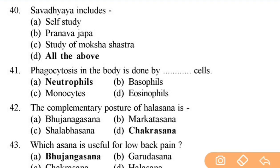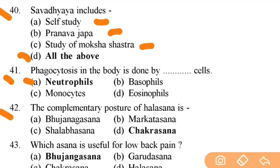Svadhyaya includes — right answer is D — all of the above: self-study, Pranava Japa, study of Moksha Shastras. Next: phagocytosis in the body is done by — right answer is A — neutrophils. Next: complementary posture of Halasana is — right answer is D — Chakrasana.